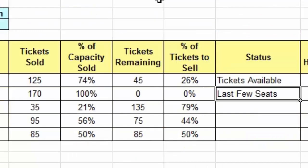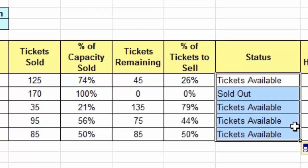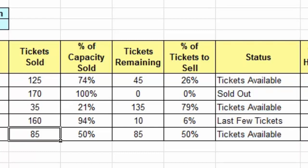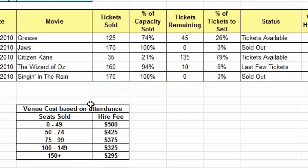I'm going to delete the incorrect nested IF function and copy down the correct one. As you can see, copying it down works correctly. If we take the Wizard of Oz show and take it to 160, we get last few tickets. And if Singing in the Rain is sold out at 170, we get the sold out message — so it's all working.